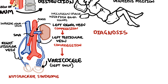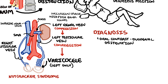Diagnosis of superior mesenteric artery syndrome can be challenging as it is uncommon and has nonspecific symptoms. However, oral contrast can be used with upper gastrointestinal series, which usually demonstrate a delay in passage of contrast from the duodenum to the next part of the small intestine. Imaging of the arterial system can also help using contrast CT or MRI.